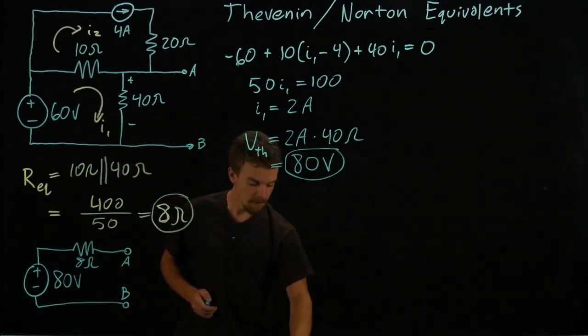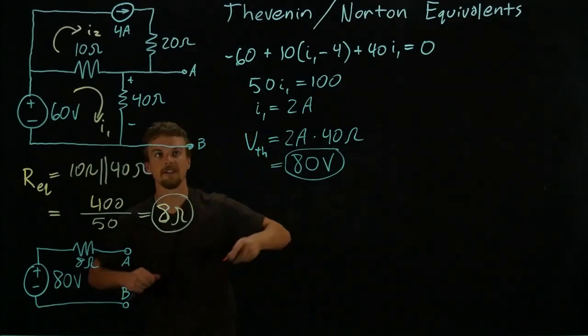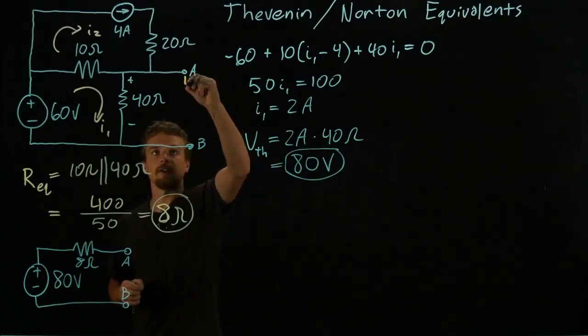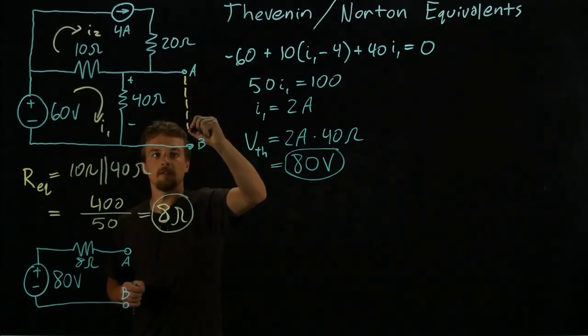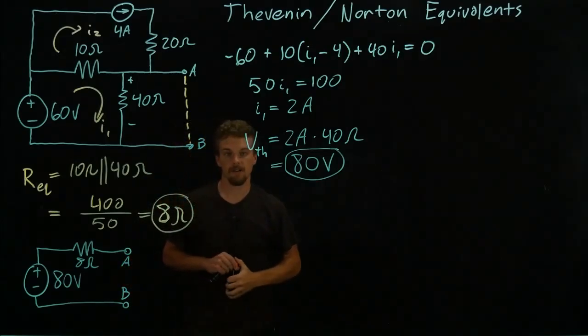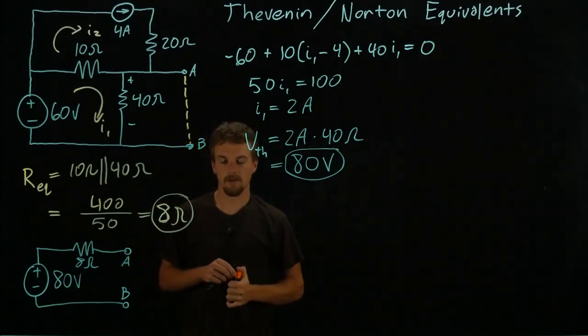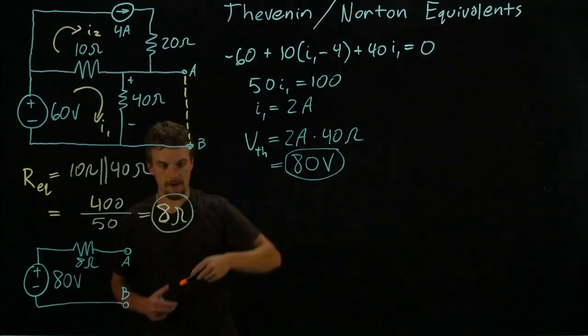So we're going to theoretically draw a short here because if we just put a wire in between points A and B now, and we're going to solve for the current that flows through that wire.